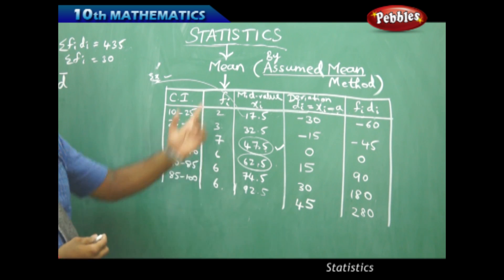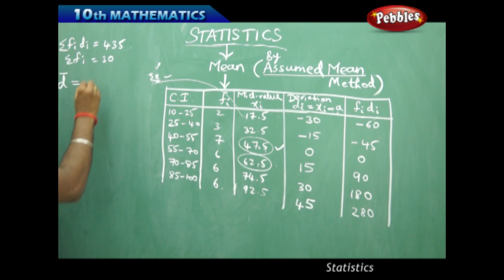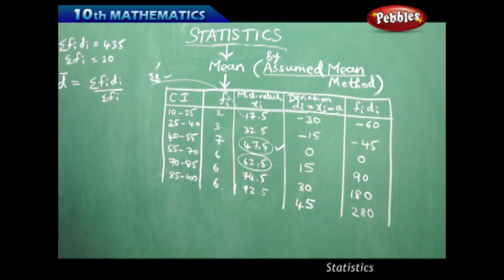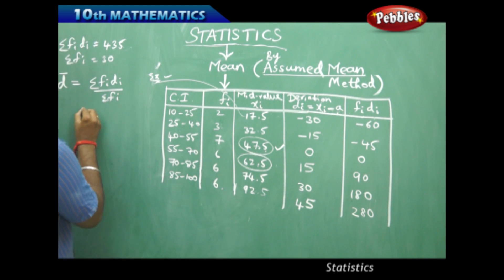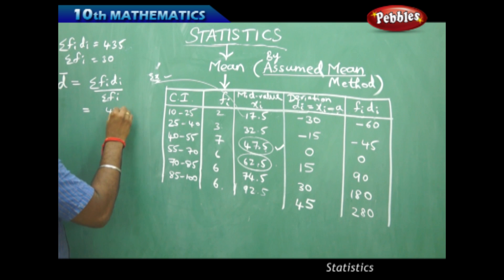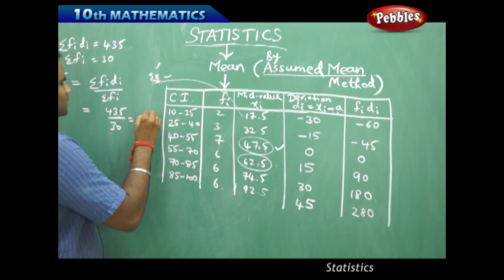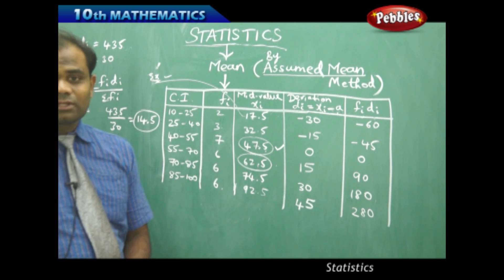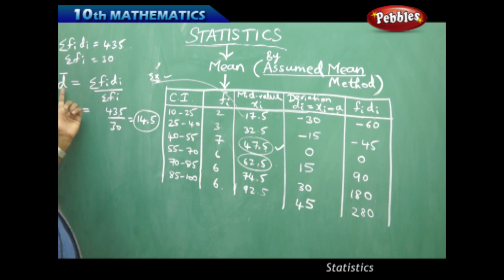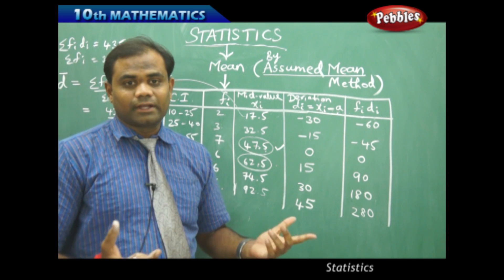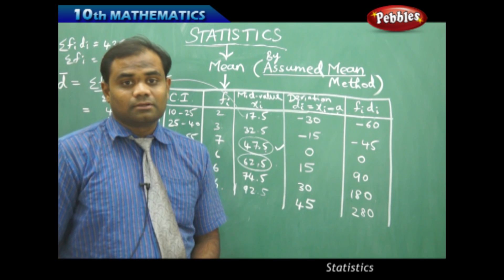Using the assumed mean method, the mean of the deviations — d-bar — is calculated using the formula: d-bar = sigma(fi·di) / sigma(fi). Substituting our values: d-bar = 435 / 30 = 14.5. However, this d-bar is not the final mean; it is only the average deviation we have calculated.